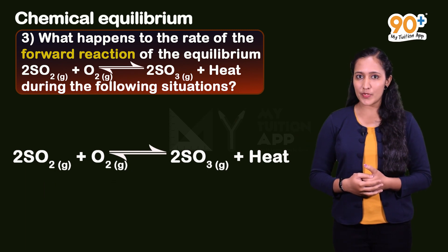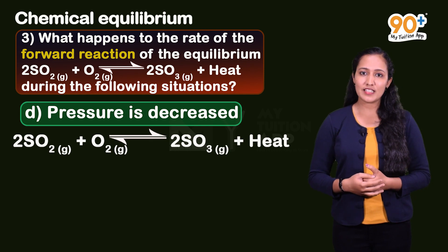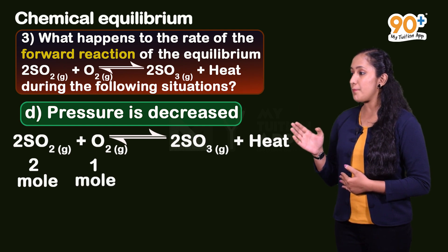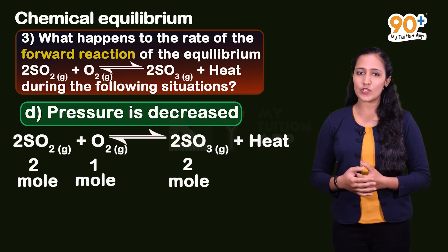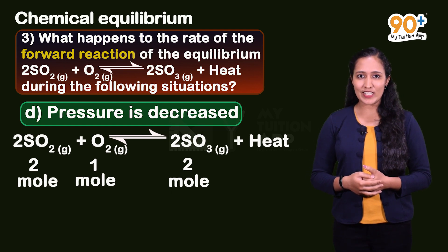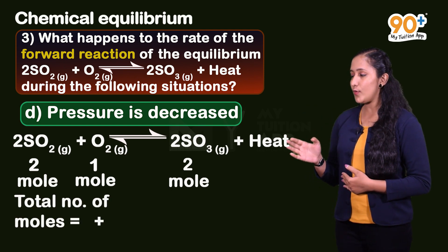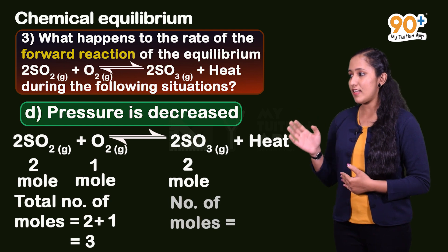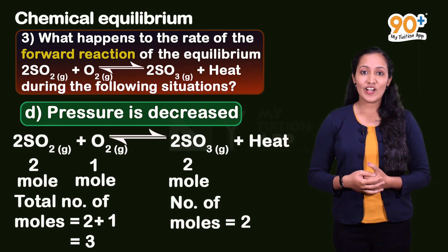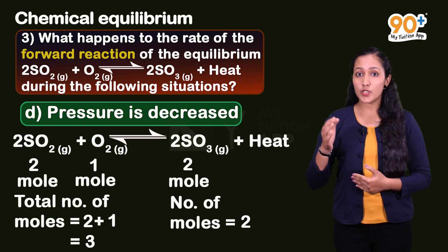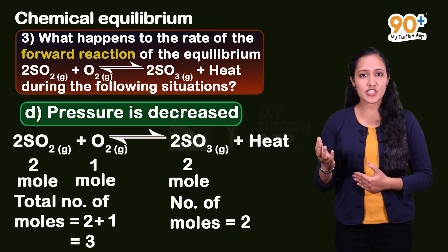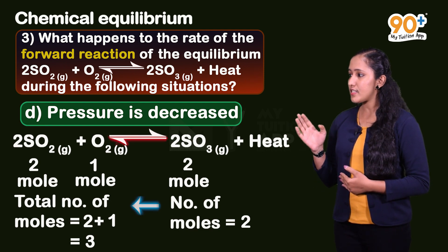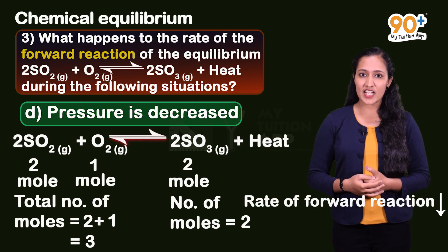D - pressure decreased. In this reaction, 2 mol SO2 and 1 mol oxygen combine to form 2 mol SO3. On the reactant side, total number of moles equals 2 + 1 = 3. On the product side, number of moles equals 2. We already learned that when pressure decreases, the reaction in the direction with more moles is favored. So in this case, the backward reaction rate increases, meaning the forward reaction rate decreases.